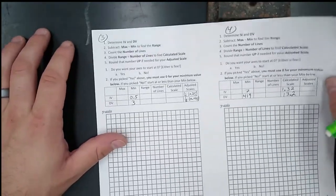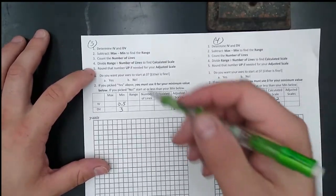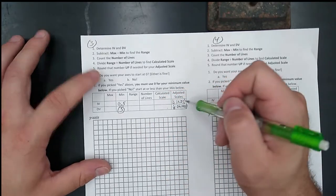Flip around to the back side. We're going to be doing something very similar. Starting at the minimum, counting by the scale.